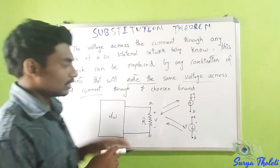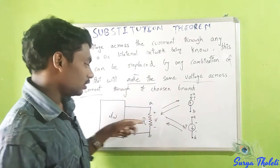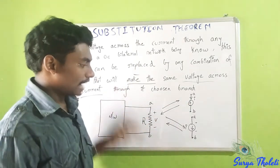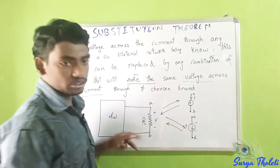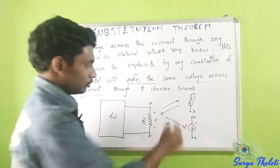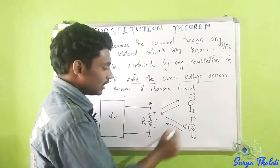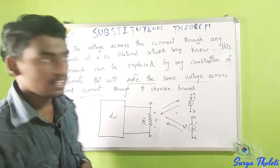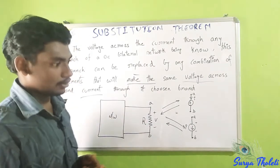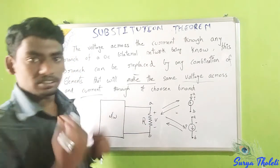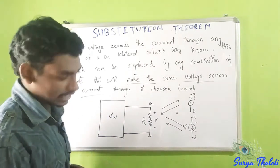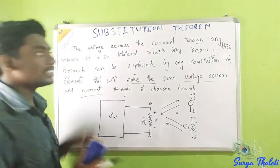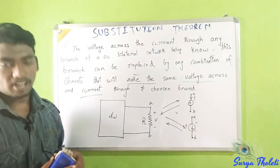I have to change the voltage source and current source — add or delete. You can do this pattern. This is the perfect example to explain the information. Also, one for the statement — okay, statement and description.